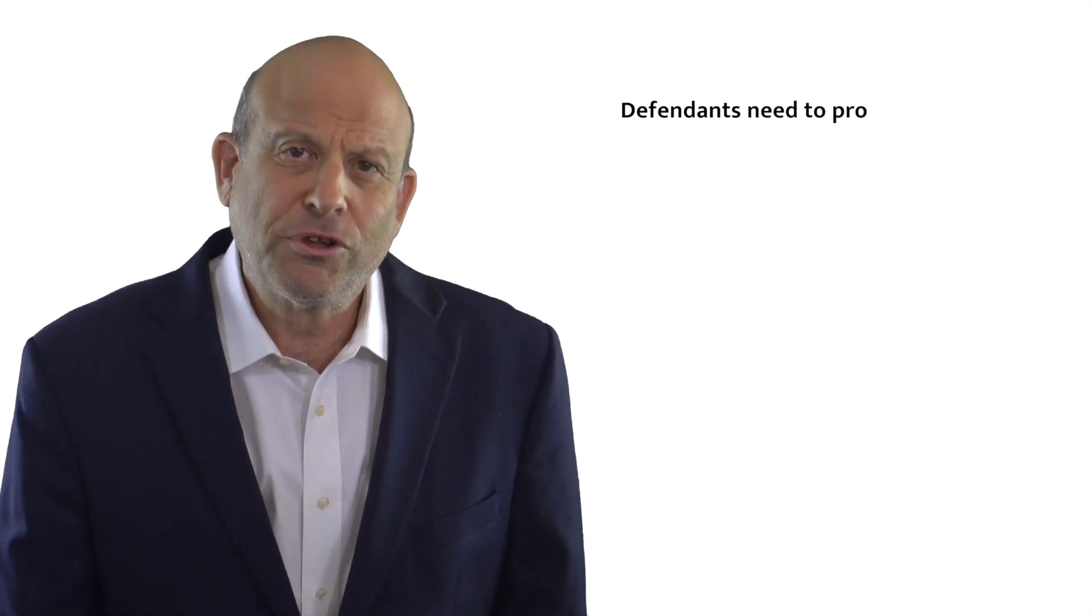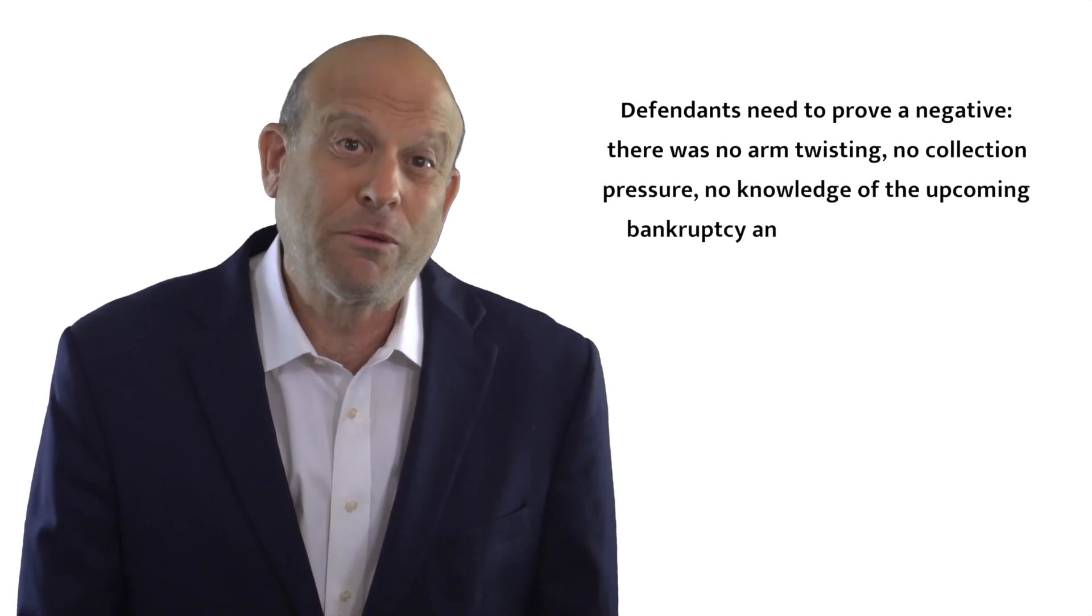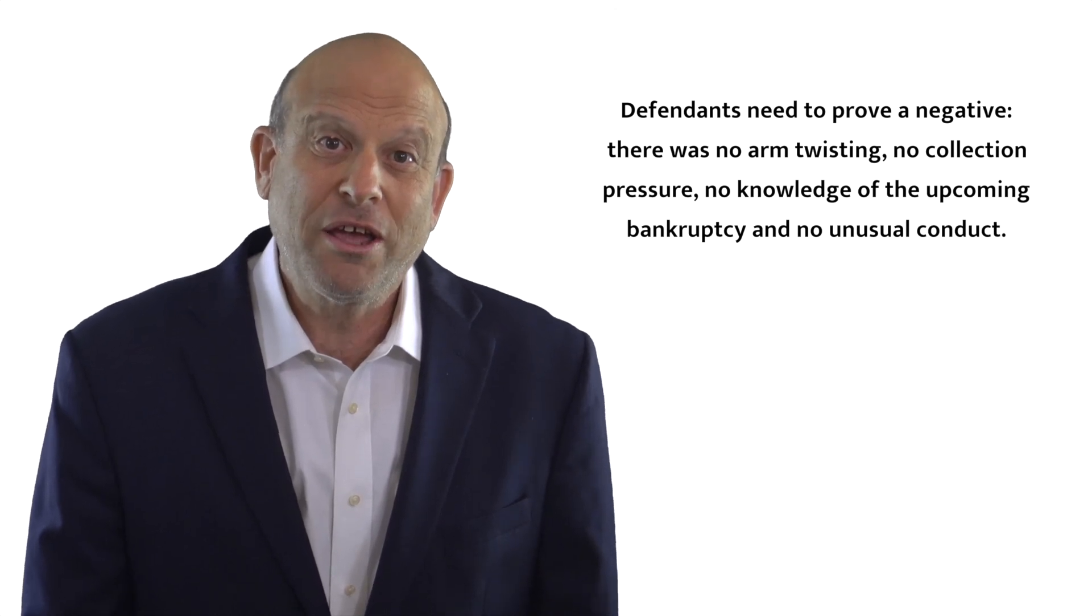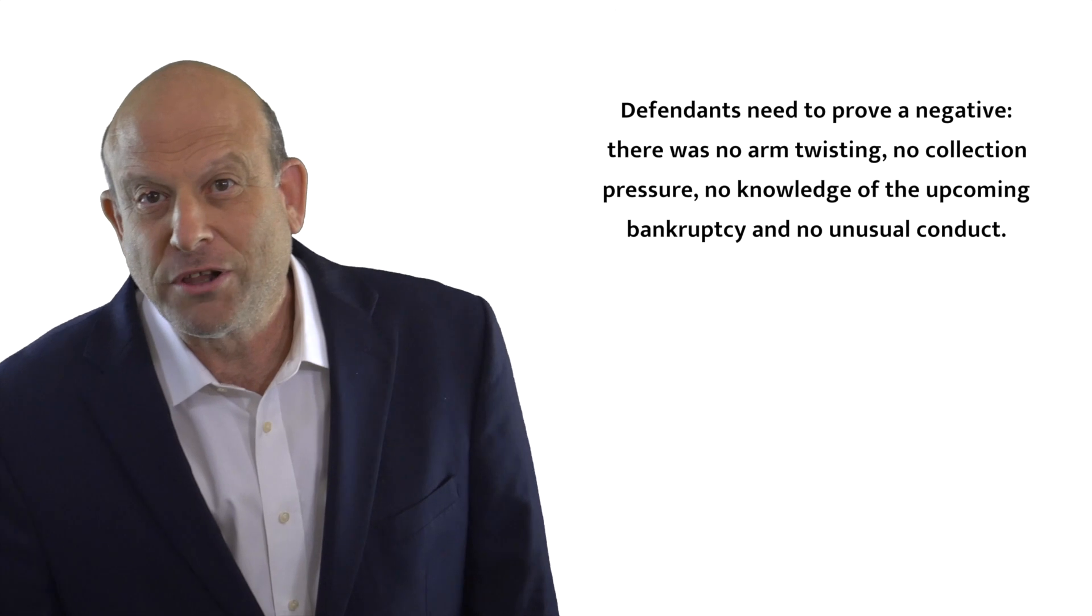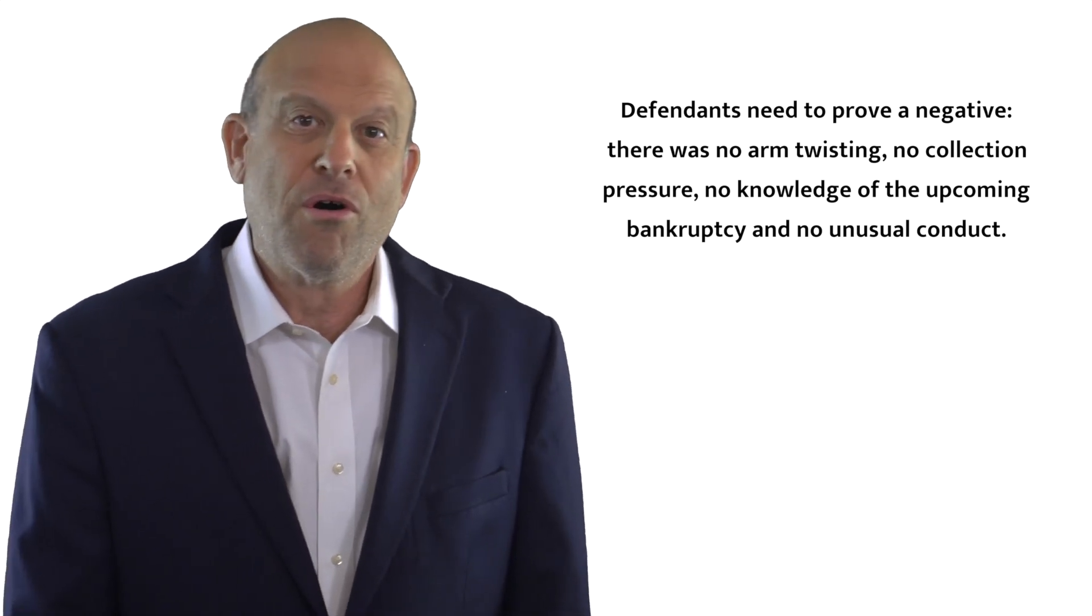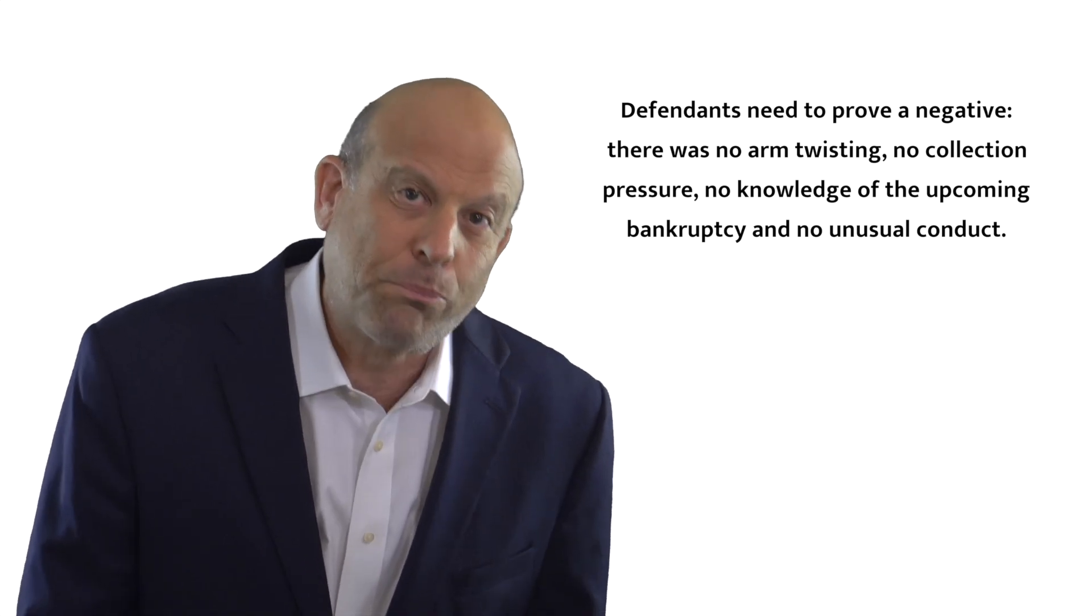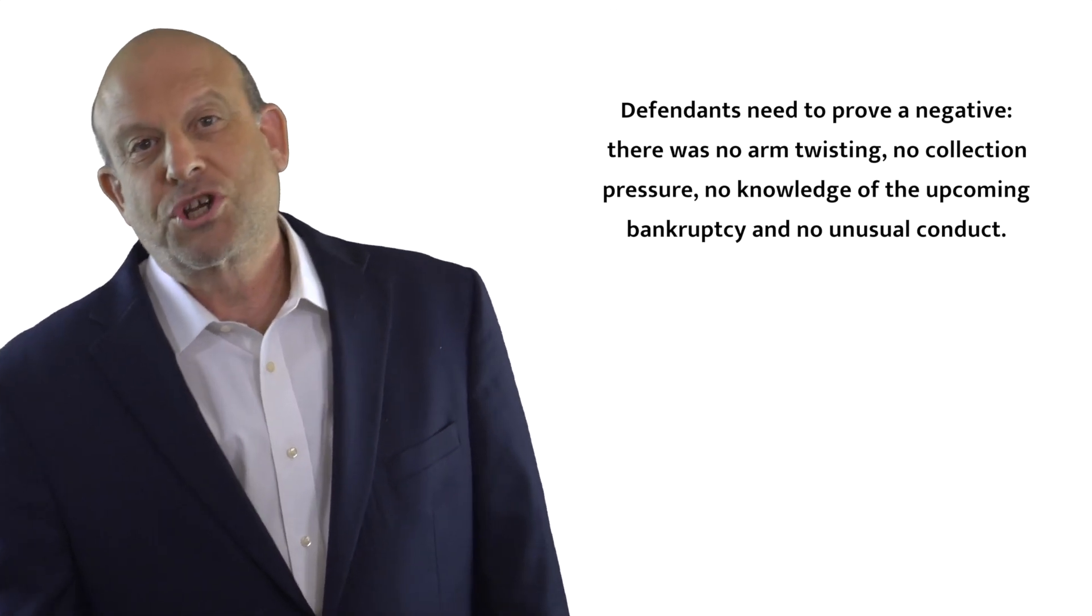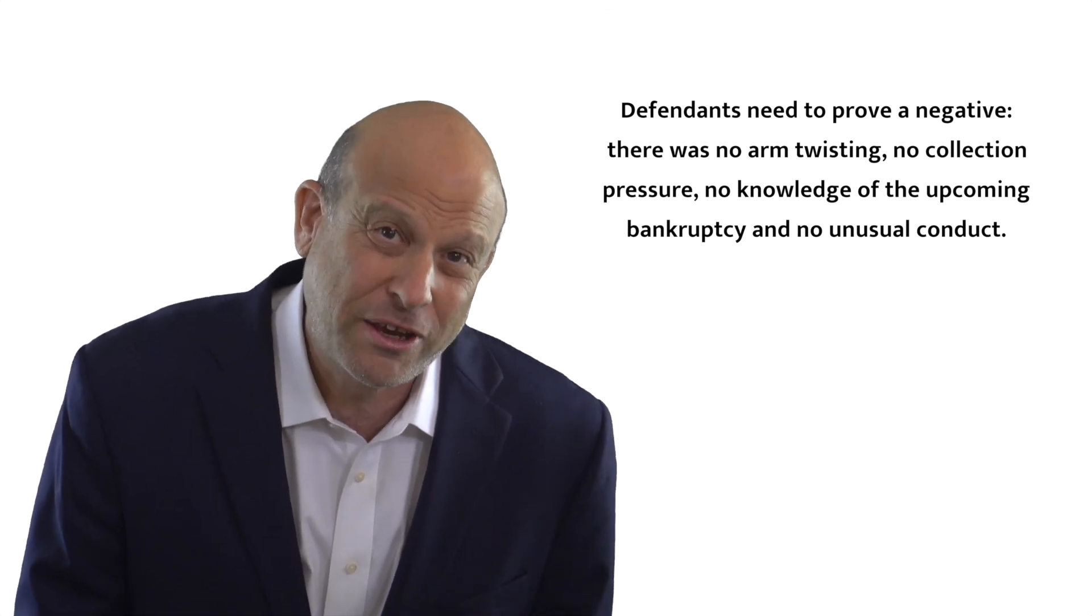It's a convoluted and, I think, kind of a weird defense because we need to prove a negative. We're showing the absence, for example, of suddenly ramped up collection pressure or unusually late or early payments that might imply getting special treatment. We're showing consistency to show the absence of any attempt to get an advantage because of a looming bankruptcy.